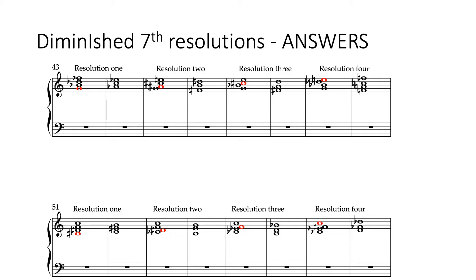The D sharp diminished seventh can resolve to E major. We can do some rewriting and treat the F sharp as the leading note, so it goes to G major. We can treat the A as the leading note, so that A resolves to B flat major. We can treat the C as the leading note, so that resolves to D flat major. And again, we can resolve to the minor keys as well: E minor, G minor, B flat minor, and D flat minor — which we'd really rewrite as C sharp minor.